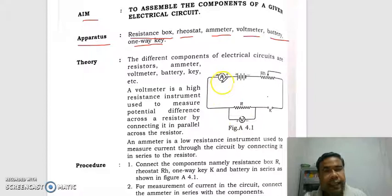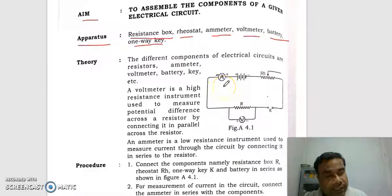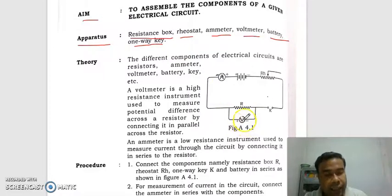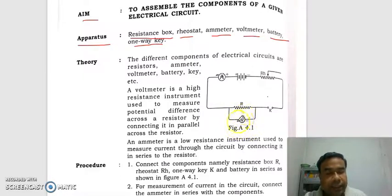Keep in mind: emitter is always connected in series because emitter is a low resistance device, so it is connected in series. Volumeter is a high resistance device, so it is always connected in parallel to the circuit. Here, the volumeter measures the potential difference across this resistance.